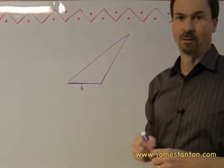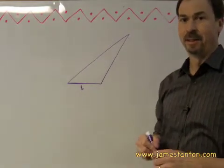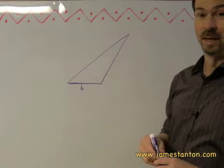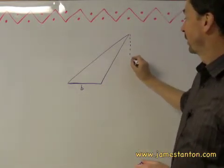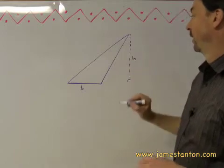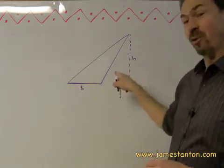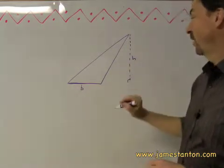We just showed that the area of a nice triangle is half its base times its height. But here's a not nice triangle. It's not nice because it's obtuse, and its height is actually sitting outside the figure. So I'm wondering, is the area of this triangle still half b times h?